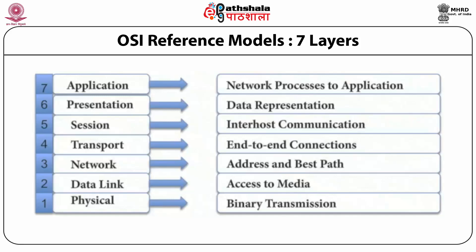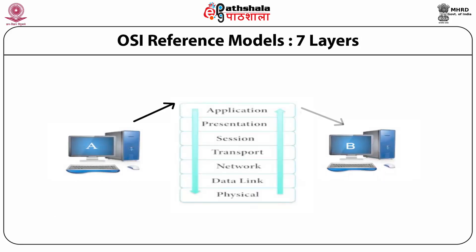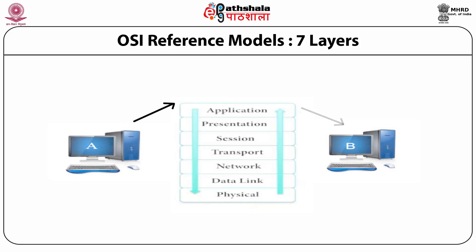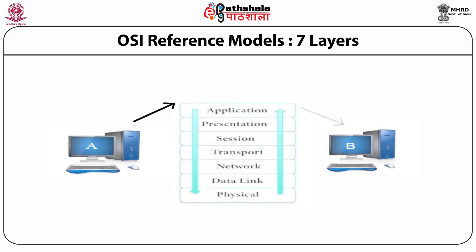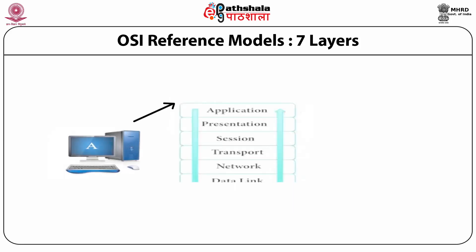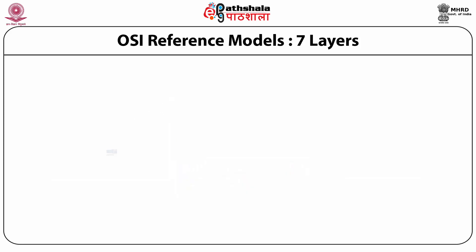Once the responsibility is learned, the layers are easy to recall. Computer A wants to communicate with computer B on the network. A passes the application to the top layer — the application layer — and the process interacts with the application. It then passes down through presentation, session, transport, network, data link, and physical layer.